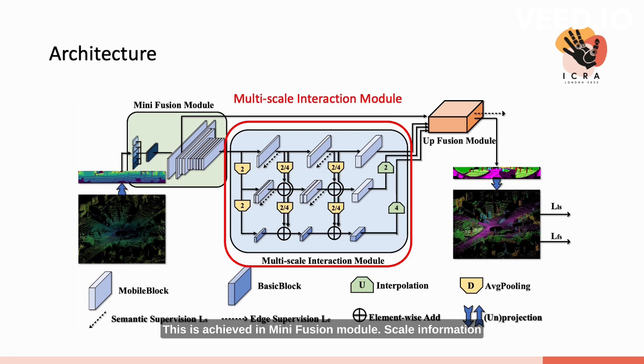Scale information is important in 2D semantic segmentation tasks. Here, we adopt a multipath architecture, where each path is responsible for an independent scale, and information from different scales can be fully fused here. We also apply different supervision at different paths according to their characteristics, which will be shown later. This module is named as the multi-scale interaction module.